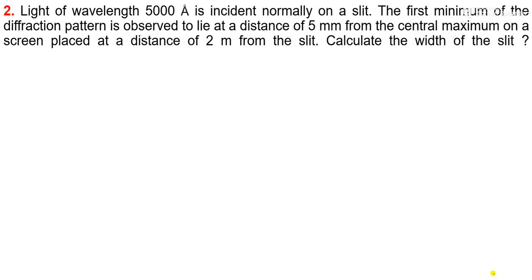The next question: light of wavelength 5000 angstrom is incident normally on a slit. The first minimum of the diffraction pattern is observed to lie at a distance of 5 mm from the central maximum, on a screen placed at a distance of 2 meters from the slit. Calculate the width of the slit.